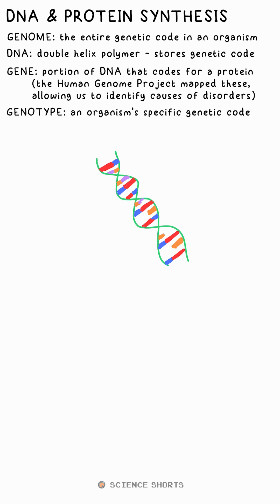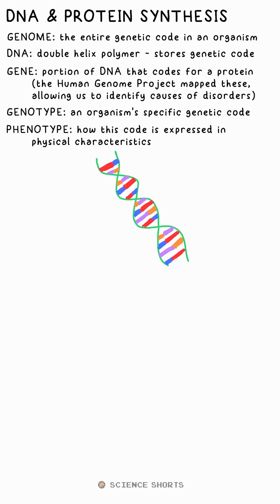Genotype is the term given to what code is stored in your DNA specifically, while phenotype is how that code is expressed in your characteristics — what proteins are made. It affects your physiology.